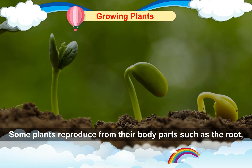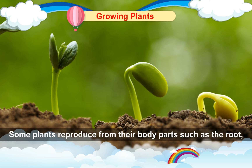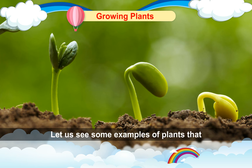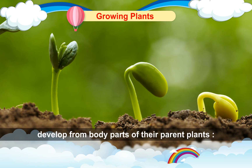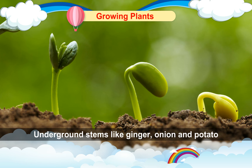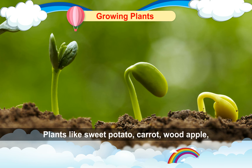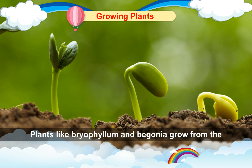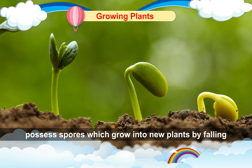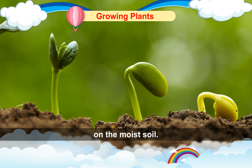Growing plants without seeds. Some plants reproduce from their body parts such as the root, leaf or stem. This type of reproduction is called vegetative reproduction. Plants like sugarcane, rose and money plant can grow from stem cuttings. Underground stems like ginger, onion and potato have buds on them which can grow into new plants. Plants like sweet potato, carrot, wood apple and tamarind grow from the roots of their mother plant. Plants like bryophyllum and begonia grow from the edges of the leaf of their mother plants. Some plants such as ferns, mushrooms and mosses possess spores which grow into new plants by falling on moist soil.